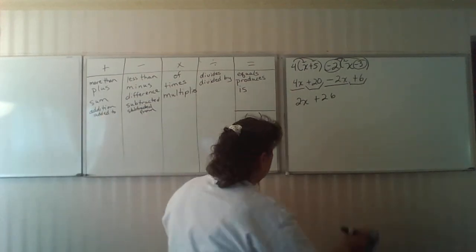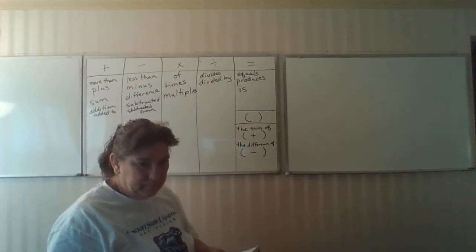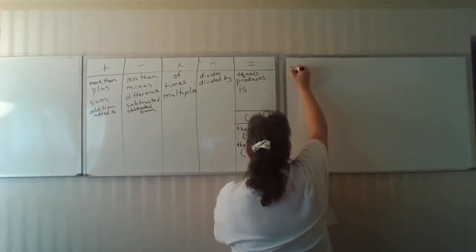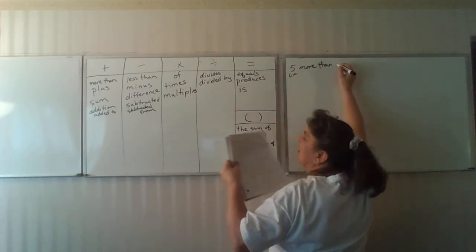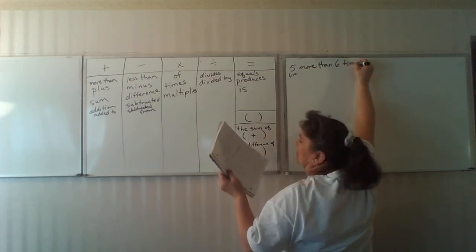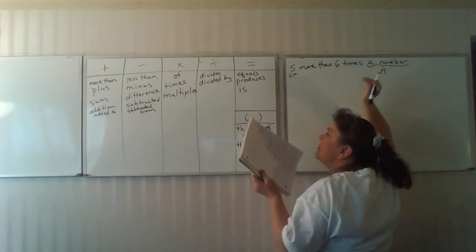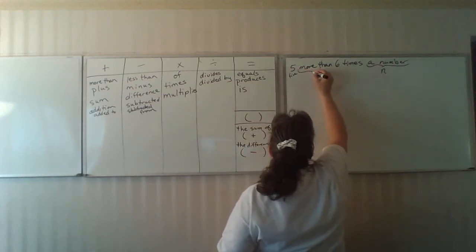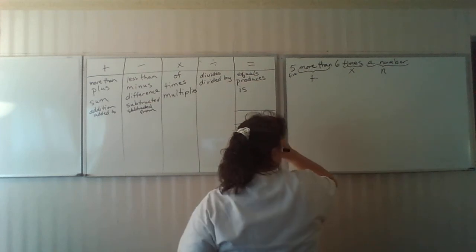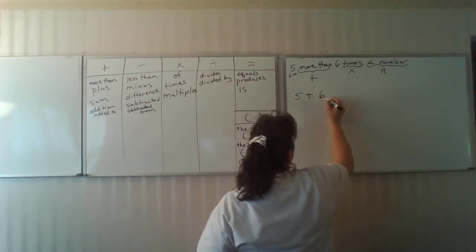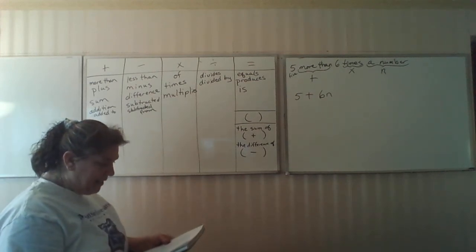Now let's look at the words and how to translate them into expressions. Five more than six times a number. This word a number indicates your variable, and I'm going to use n for it. More than indicates addition, times indicates multiplication. So we have five plus six times a number, 5 plus 6n. I don't need to write the multiplication sign down, because 6n indicates six times n.